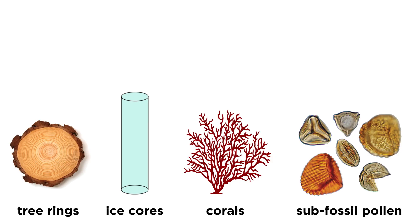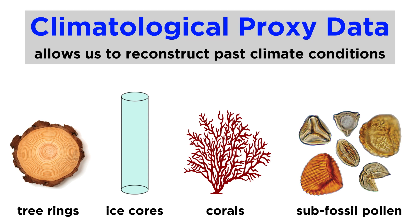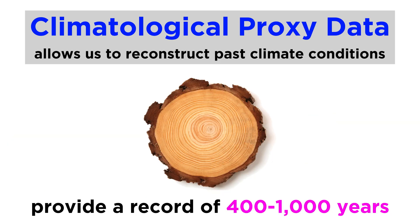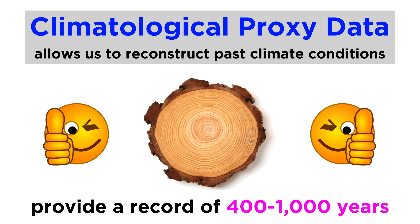Tree rings, along with ice cores, corals, and subfossil pollen in lake sediment, provide a type of climatological proxy data. This means that they can be used instead of direct meteorological measurements to reveal past climate information, and we'll cover exactly how this is done a bit later. Compared to these other forms of proxy data, tree rings provide a relatively short record in that most chronologies date from 400 to 1,000 years, with only a handful reaching over 10,000 years. However, they are considered to be a very reliable form of proxy data, especially for tracking recent climatic shifts, since trees record this data within their very bodies.